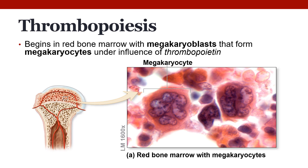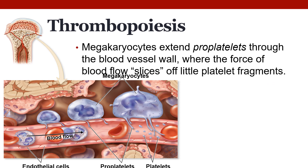Thrombopoiesis follows a different track than the other poieses. It begins in the red bone marrow with megakaryoblasts that form megakaryocytes under the influence of thrombopoietin (TPO). TPO activates megakaryocytes to stick out little pro-platelet extensions of their cytoplasm into the blood. As blood flows past, it pinches off tiny two-micron fragments from those pro-platelet extensions — those are the actual platelets. Megakaryocytes last for quite a long time while continuing to put out these extensions that blood flow slices off into platelets.